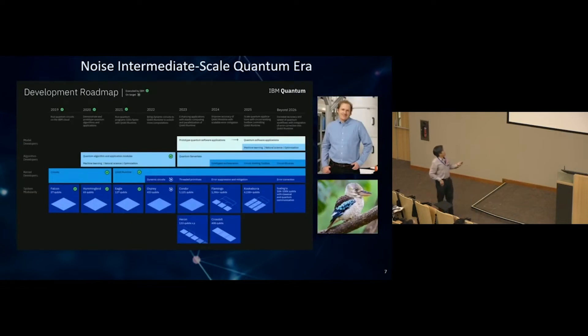IBM has this really big roadmap where in a few years' time they're going to have a 4,000 qubit processor called kookaburra. Kookaburra is better than eagles and osprey, and I think Jay Gambetta is a bit biased because he's Australian and from my center previously.